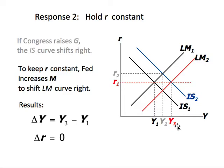The bottom line is that if the Fed wants to hold the interest rate constant, it will have to increase the money supply, which lowers the interest rate back to the original level. But it also results in an even higher equilibrium output Y3. So compared to the original situation, there is no change in interest rate, but output changes from Y1 to Y3, given by delta Y equals Y3 minus Y1.